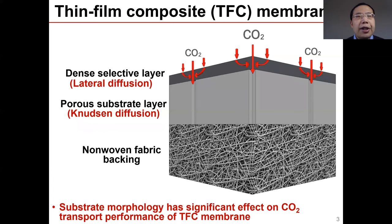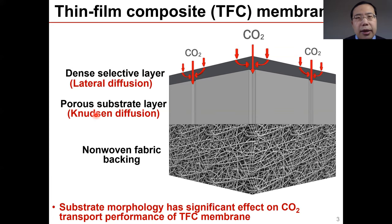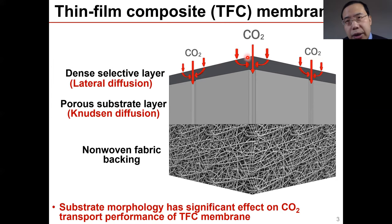Here is the schematic diagram of the TFC membrane. We use nonwoven fabric as the mechanical support. On top of that, we put on the PES substrates — that is the main thing we will discuss today. CO2 permeating through the substrate is mainly through Knudsen diffusion. On top of that, we put on the amine-containing selective layer for CO2 separation, where CO2 can directly pass through the selective layer.